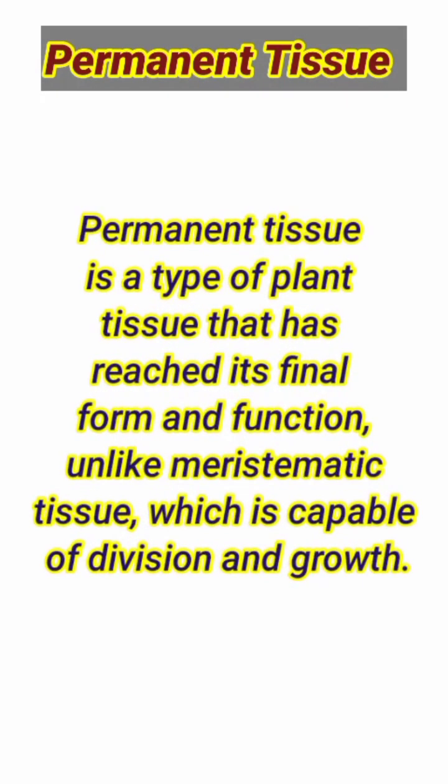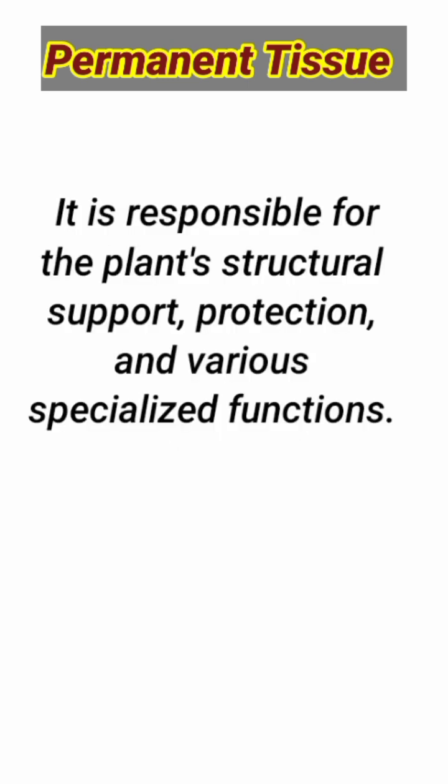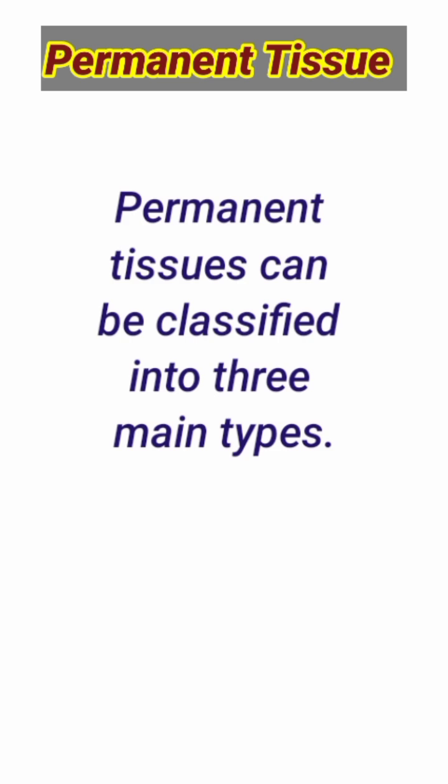Permanent tissue is a type of plant tissue that has reached its final form and function, unlike meristematic tissue, which is capable of division and growth. It is responsible for the plant's structural support, protection, and various specialized functions. Permanent tissues can be classified into three main types.